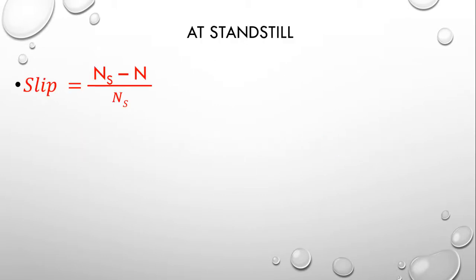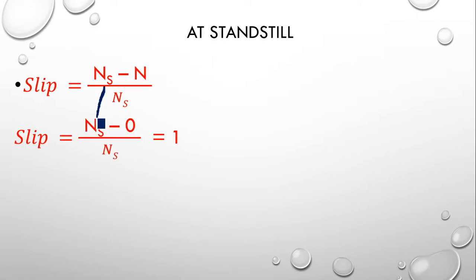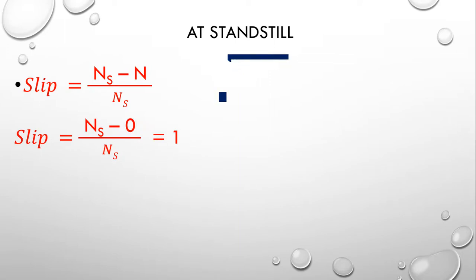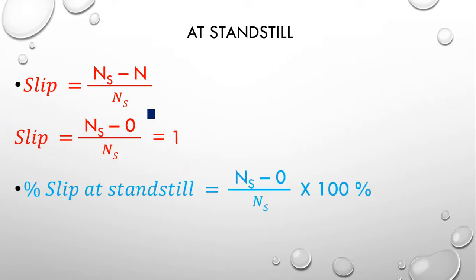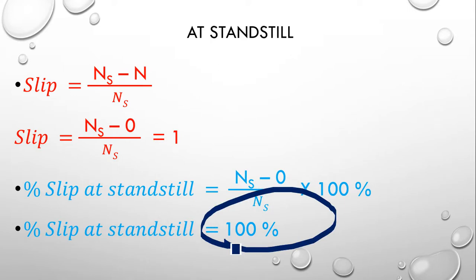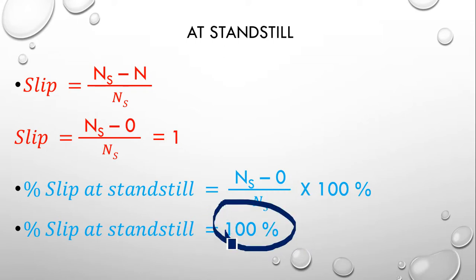At standstill, N = 0, so slip = (N_s − 0) / N_s = 1. The slip at standstill is unity, or 1. As a percentage, that is 100%. Relating back to the analogy: if one person is standstill and one is running, there is 100% chance of slipping.